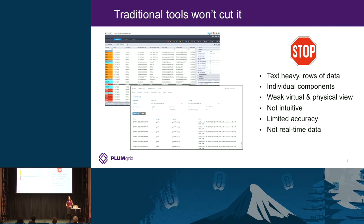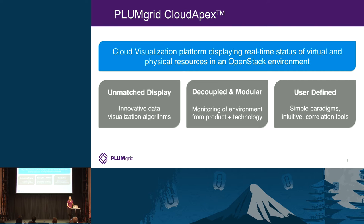Many existing tools are agent-based, so they can only look at a small percentage of data. When we embarked on this journey, we wanted to take a novel approach — to redesign how visualization, monitoring, and troubleshooting would be performed in an OpenStack environment. We took into consideration customer needs and what had been done previously, and designed something completely new. Just last week we announced this new product: Cloud Apex. The name reflects that it helps you look at your OpenStack environment from a completely different perspective.